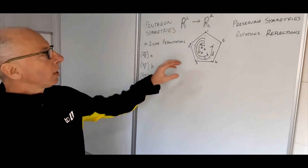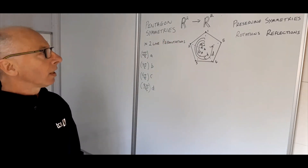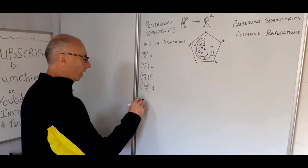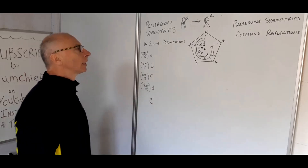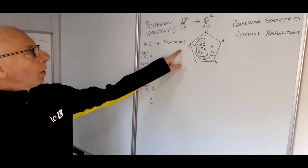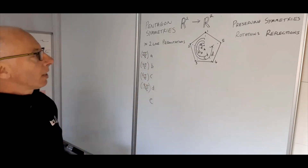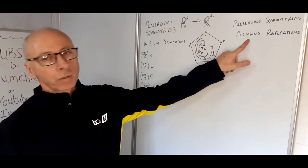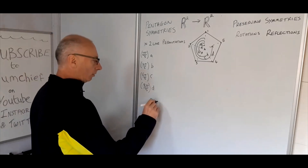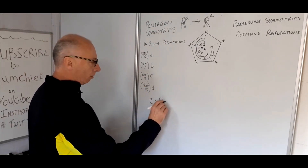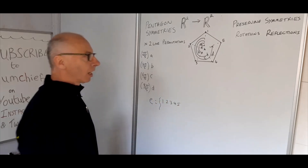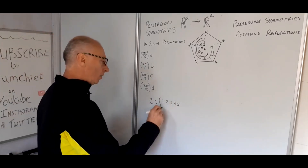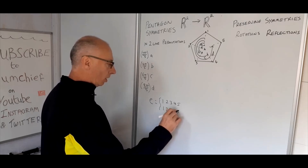The final rotation is where everything returns back to where it was — that's the identity symmetry, or the identity element, which we'll call E. E means it doesn't move at all. So for two-line permutations: write the starting point on the top line, and on the second line write down where every point ends up. Since E changes nothing, the second line just repeats the top line.